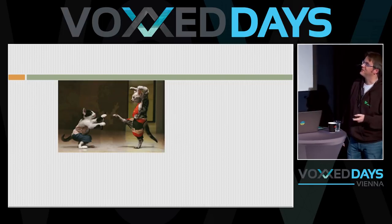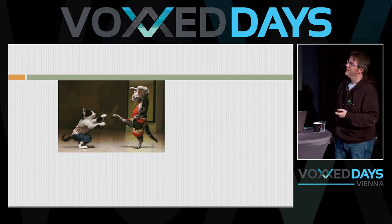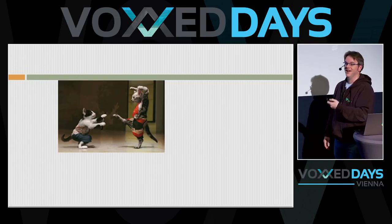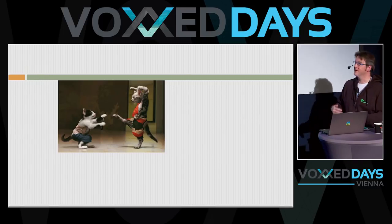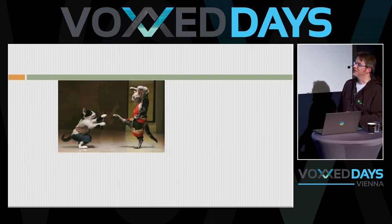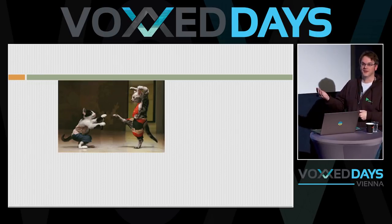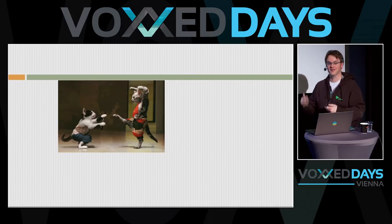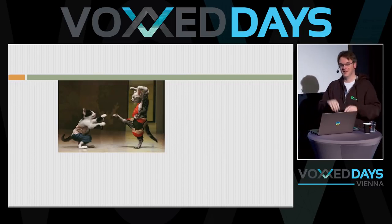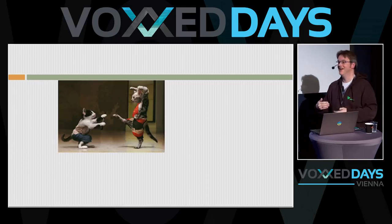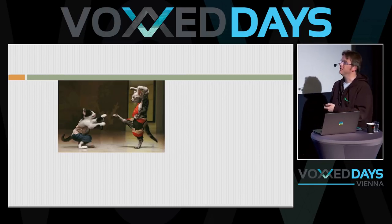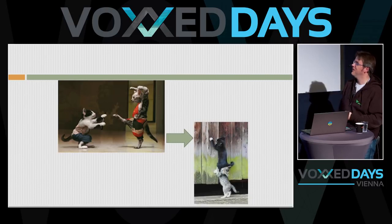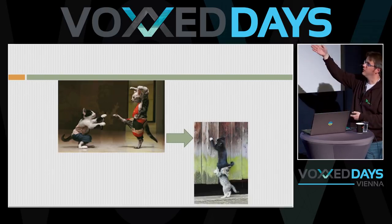The typical dynamic is: one person is the developer and the other is the security officer who by default says no. Developers are by nature inventive and find ways around security policies. For example, at a company where developers were not allowed to query the production database, one developer built a small hidden page inside the web application where you could type queries and get results back — bypassing the security officer's rule that developers shouldn't have production database access.